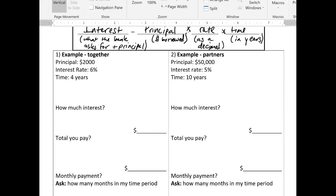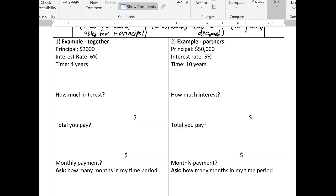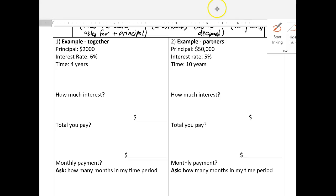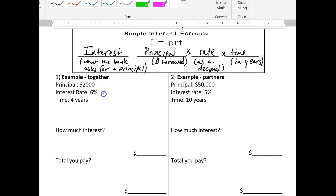So let's practice one. We're going to pretend that we have a principal of $2,000. We're going to borrow $2,000 at an interest rate of 6% because it's 6% immediately I should be thinking, oh, I got to change that to a decimal. So that is 0.06. And I'm going to borrow for four years, right?